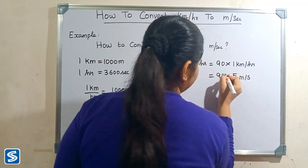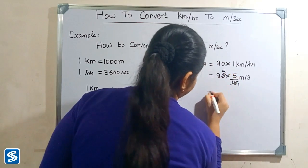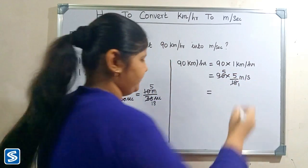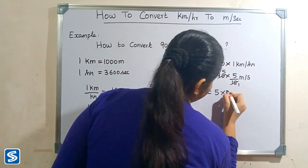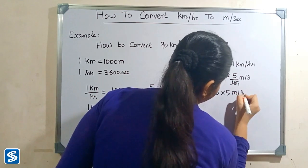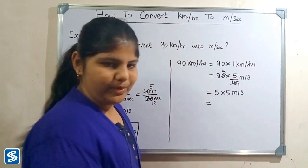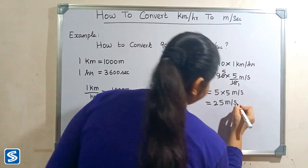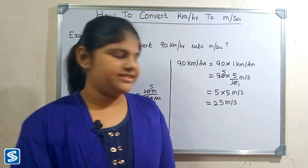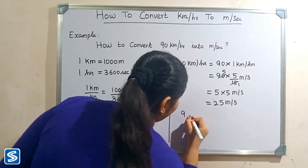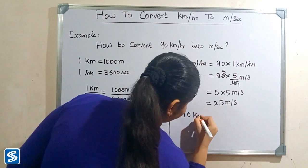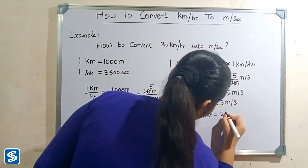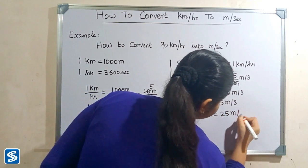18 fives are 90, so this simplifies to 5 multiplied by 5 meter per second, which equals 25 meter per second. So 90 kilometer per hour is equal to 25 meter per second.